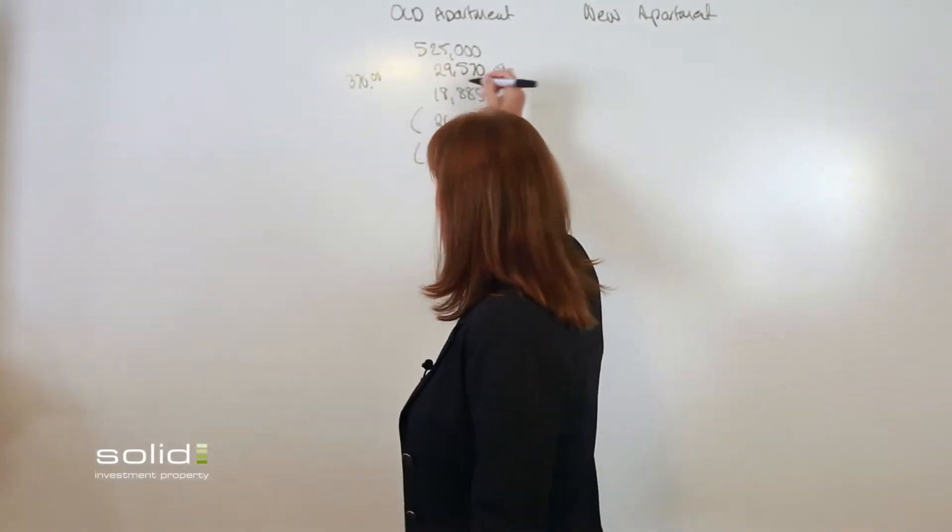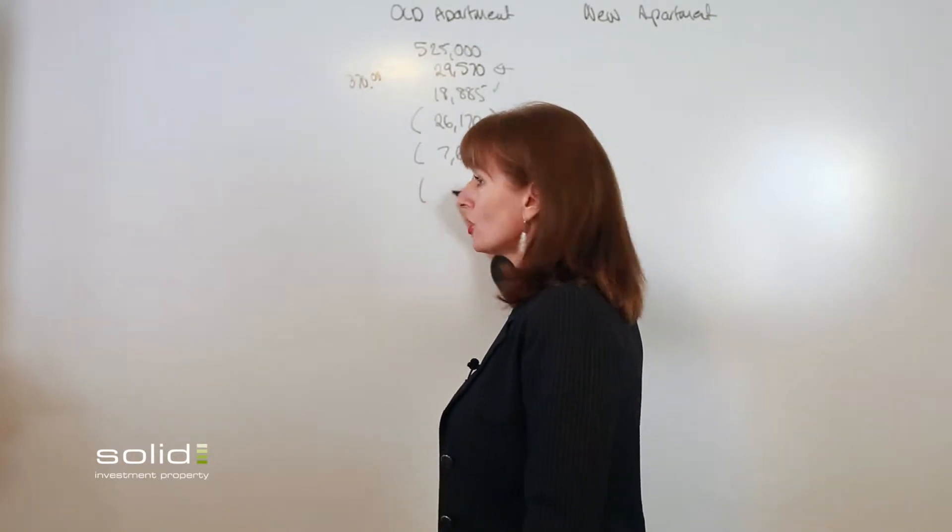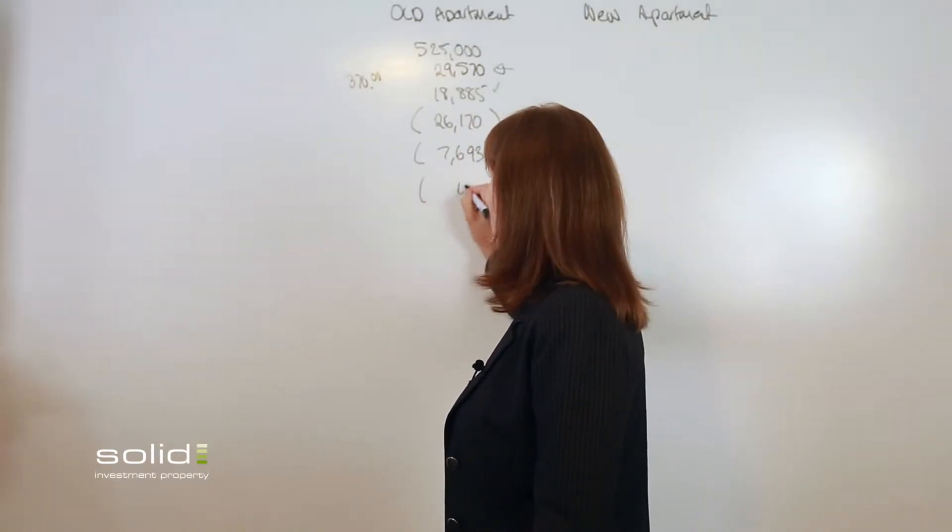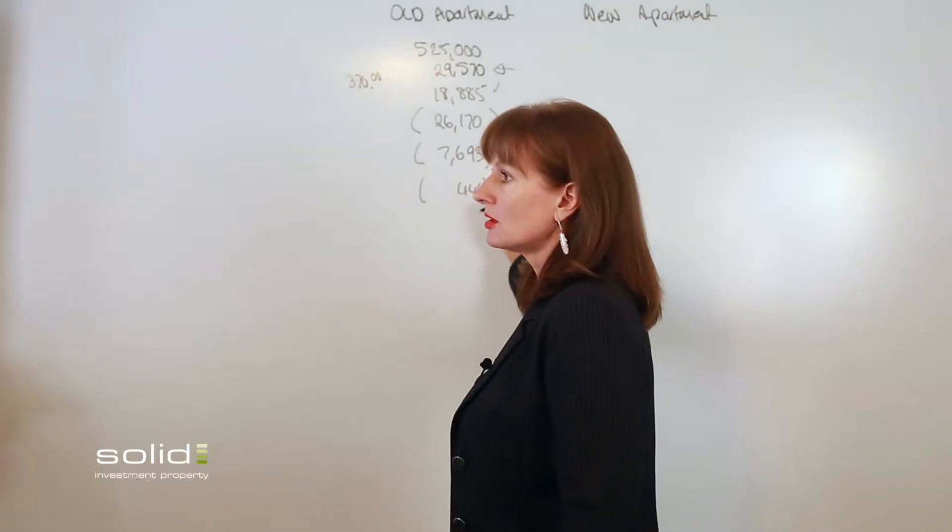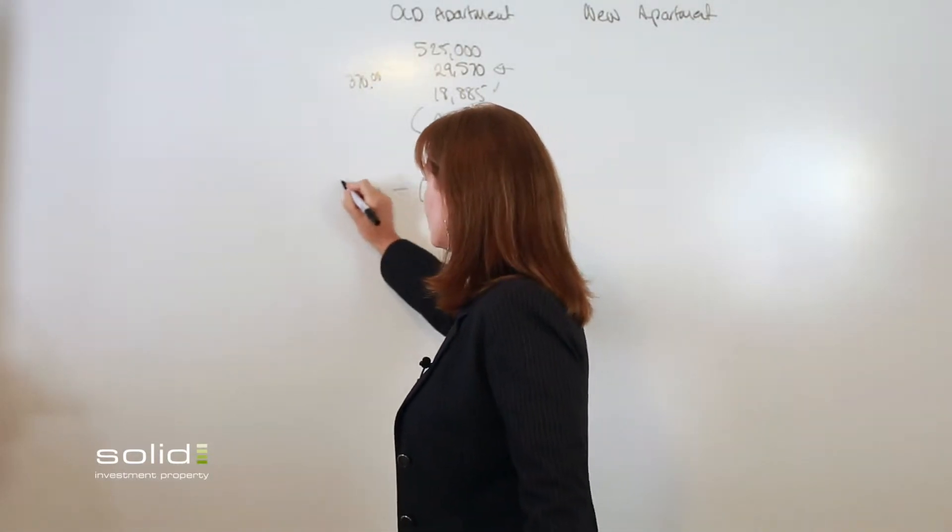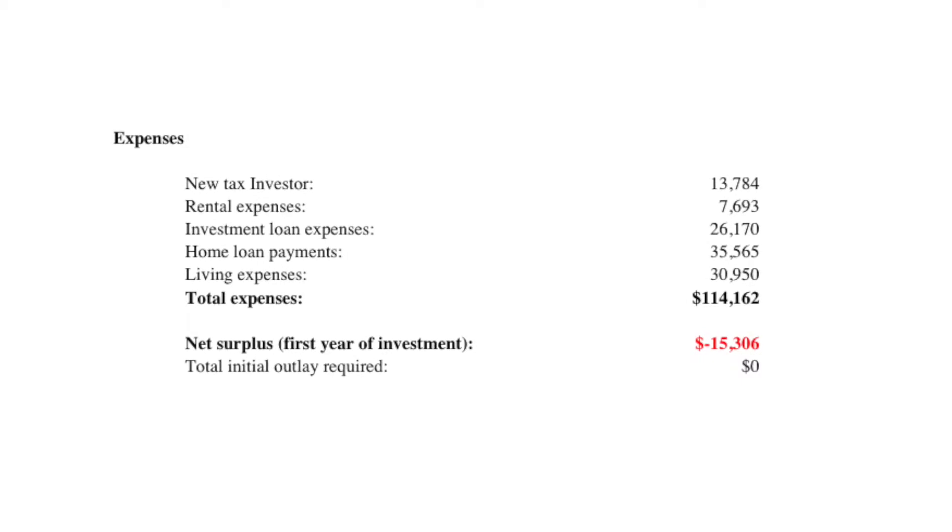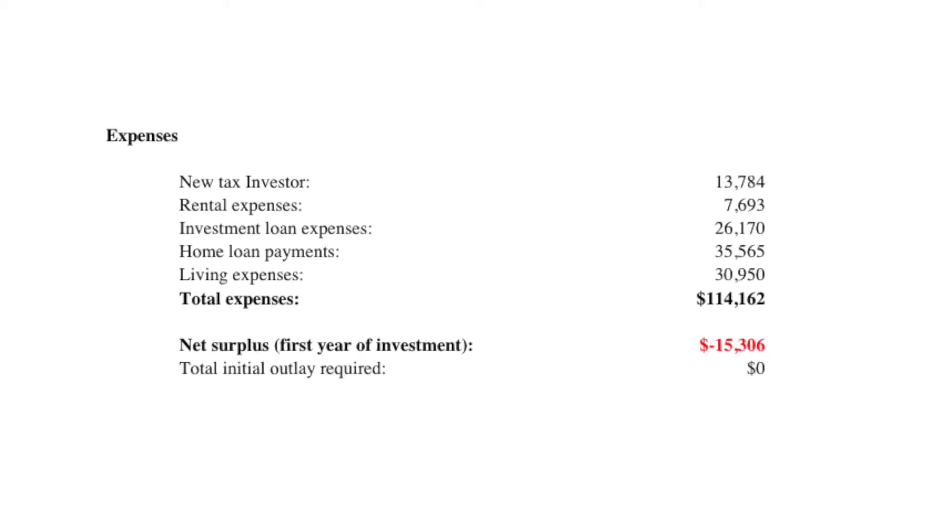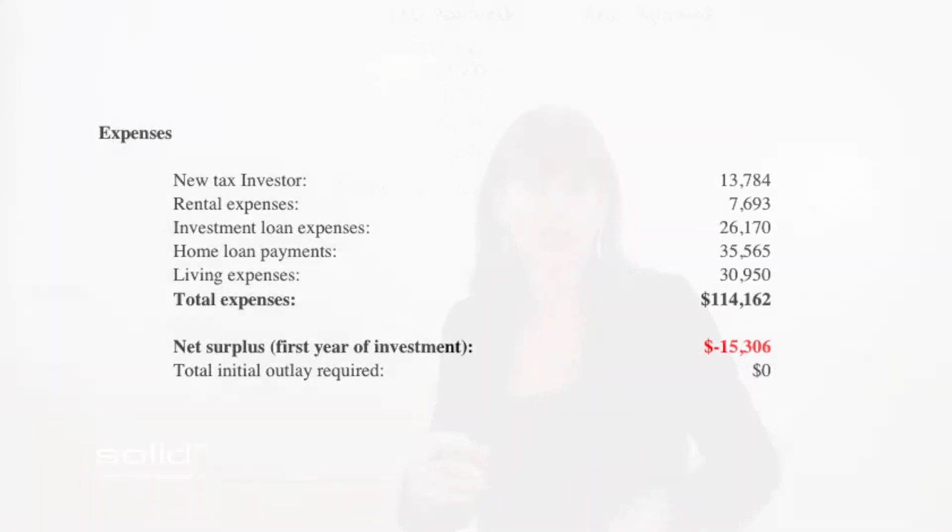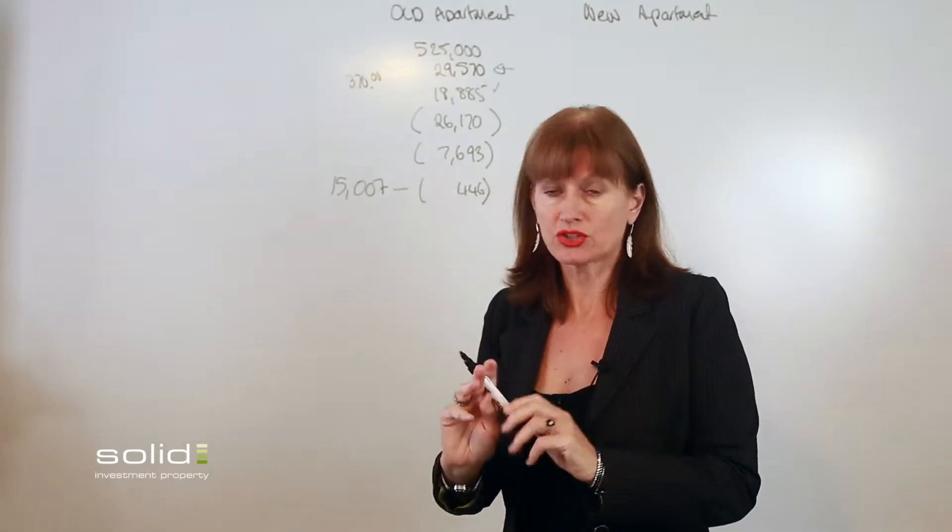So we've got costs there, so we've got income coming in here, those costs. We can write our loan costs off, which is $446. So our first cut of negative gearing, we are $15,007 out of pocket. So if you aren't getting your tax refund upfront, that's what you've got to take out of your pocket for the year before you get your refund.